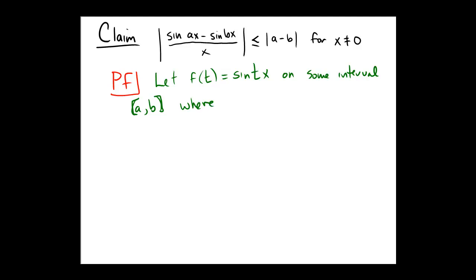Where [a,b] does not include zero. We're going to make sure it doesn't include zero, essentially because we need to make sure that this is true on x not equal to zero.